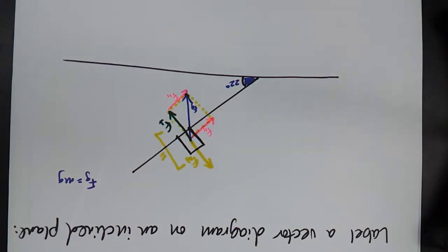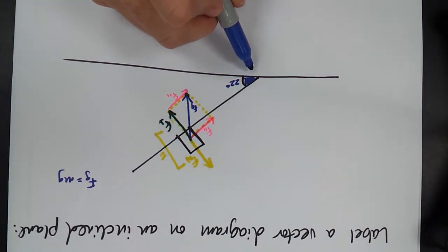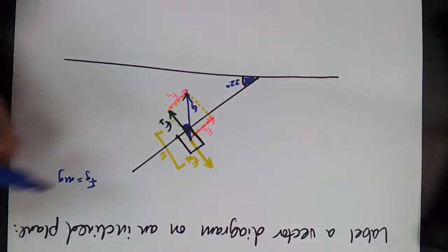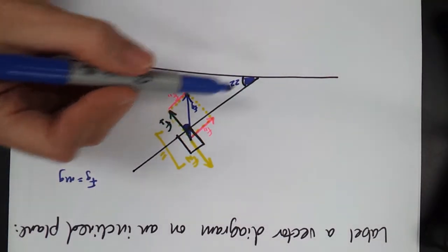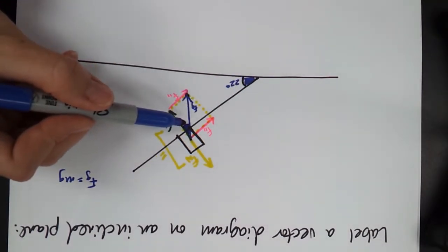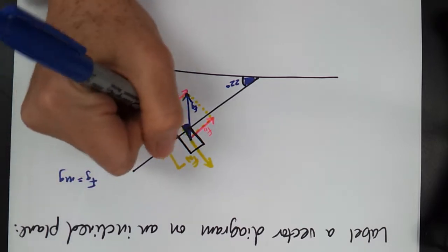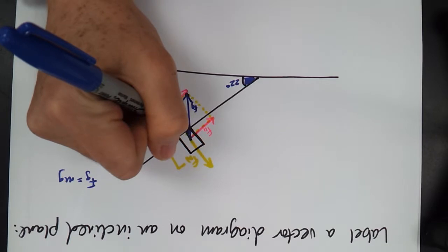And then we know, I've shown this work to you before, how this angle and this interior angle right here are equal. So whatever this angle is will become the inside angle of this triangle that we just made, with our Fg, F perpendicular and F parallel. And so this is 22 degrees.